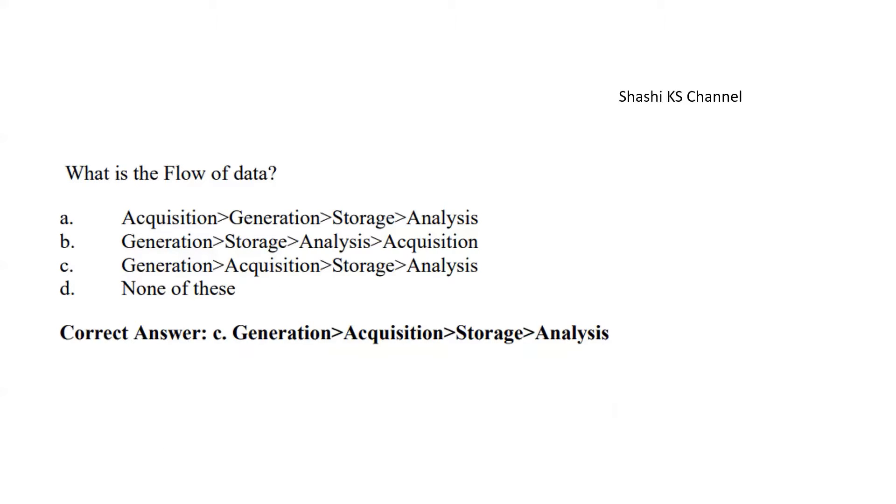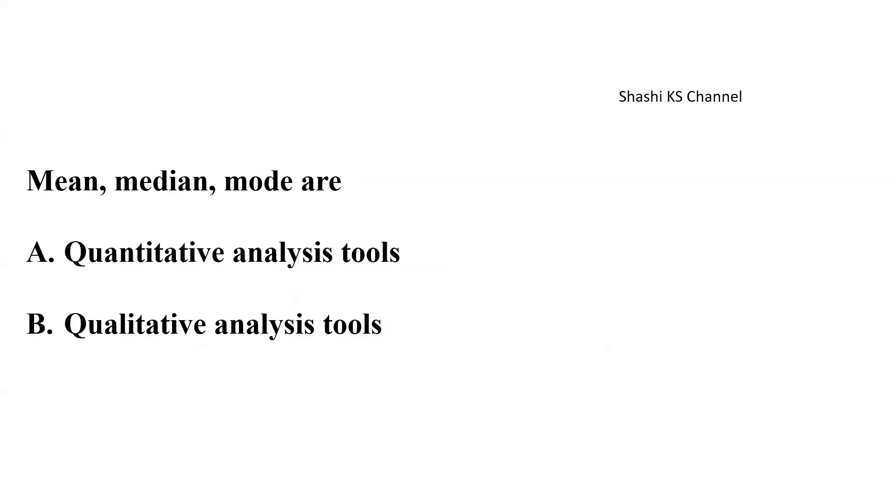Next question, what is the flow of data? The right answer to this is option C, generation will be first done, then the data acquisition happens, then it leads to storage and then it is followed by analysis of data. Next question, mean, median and mode are dash. Quantitative analysis tools, qualitative analysis tools. The right answer to this is option A, quantitative analysis tools.